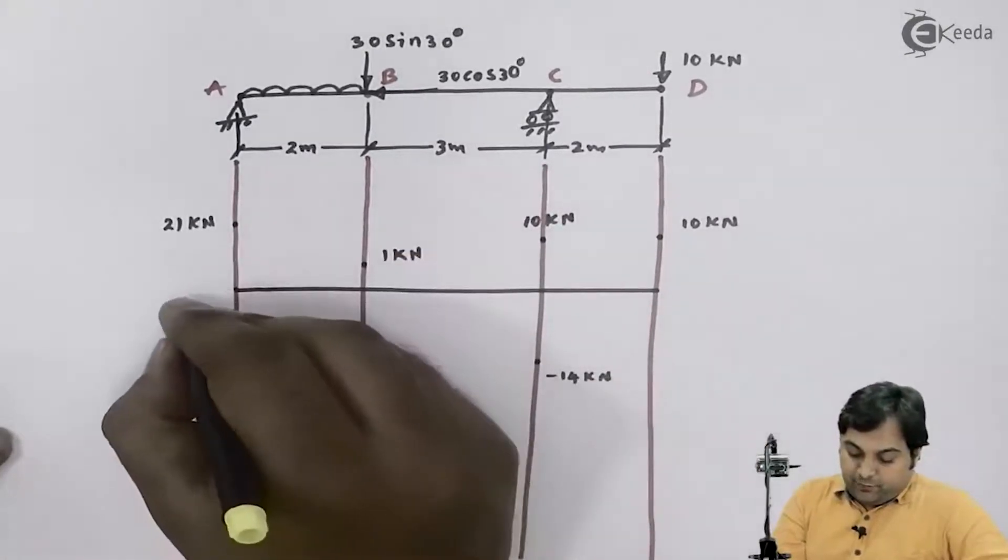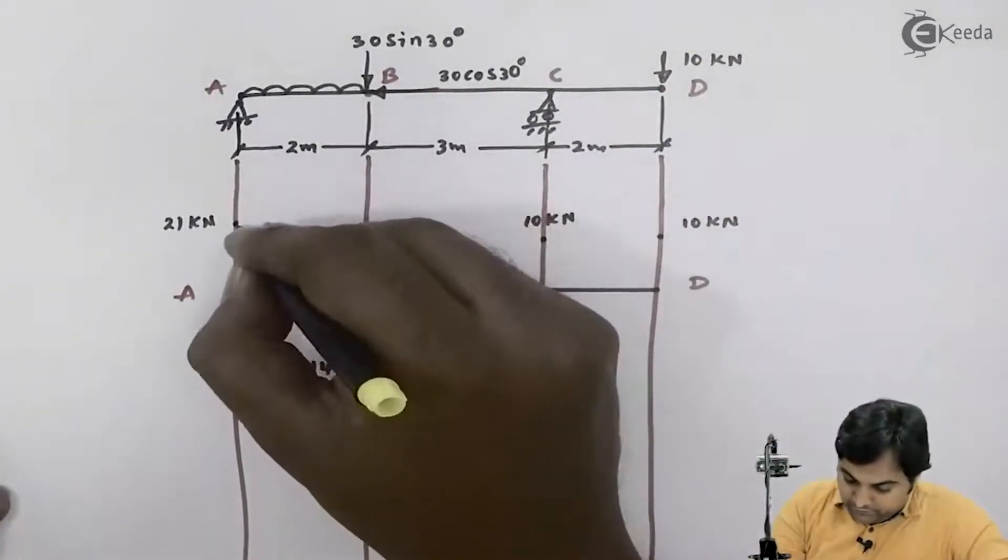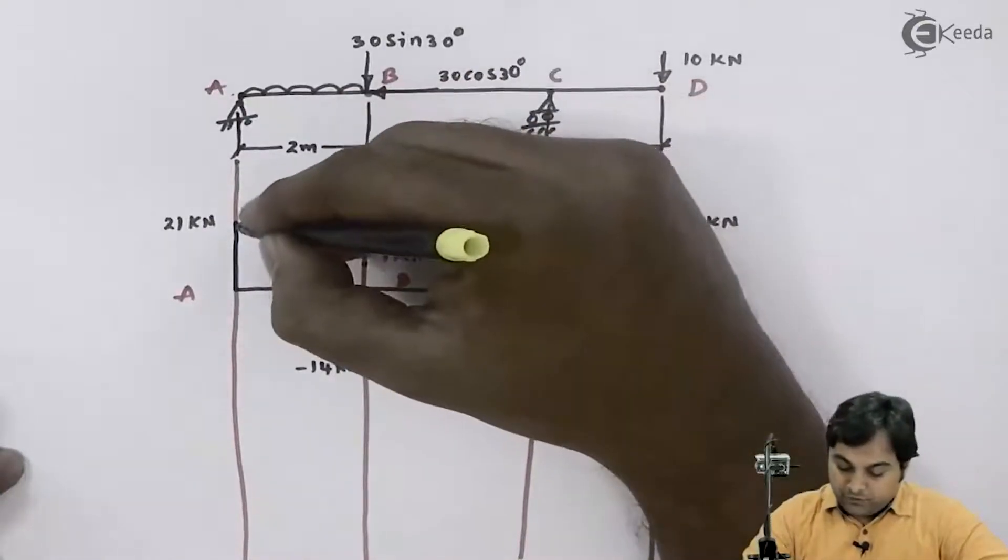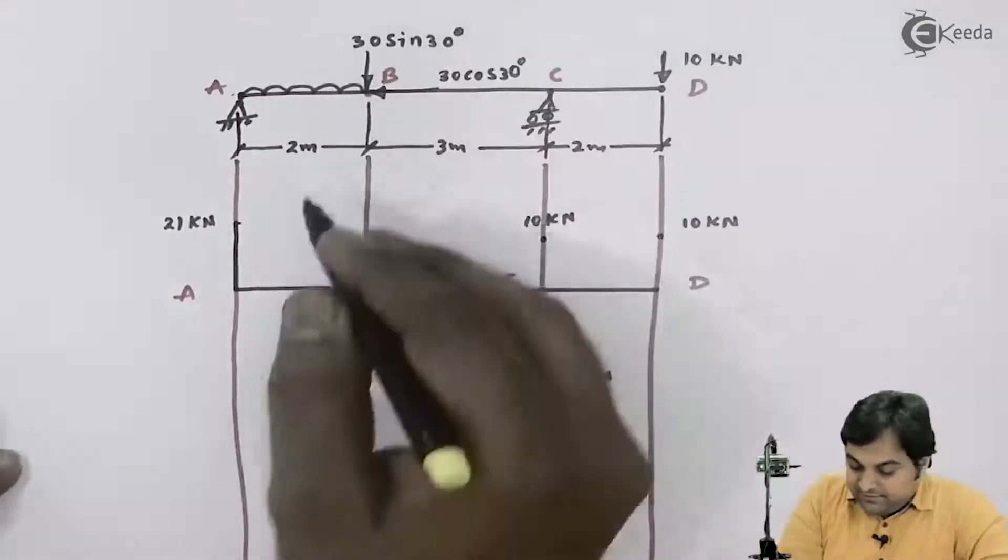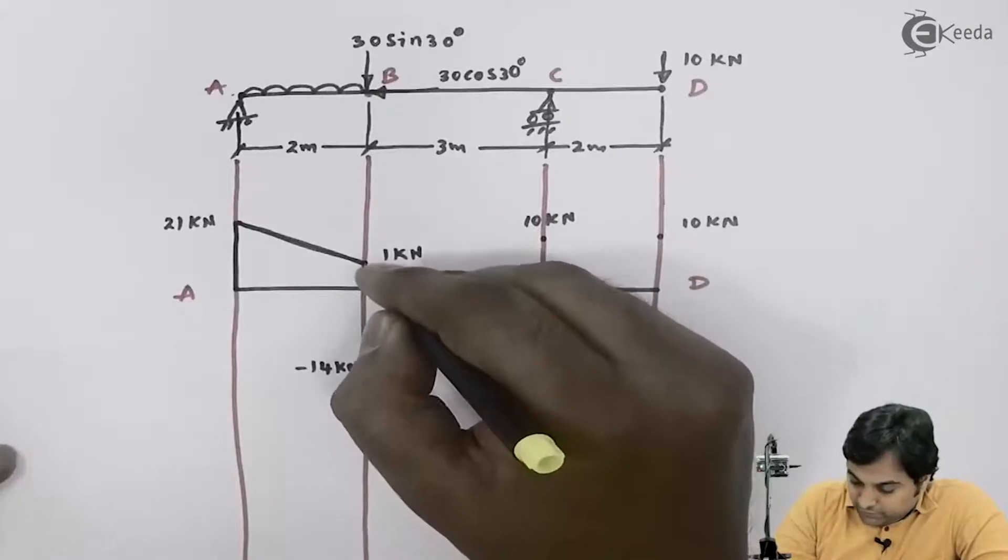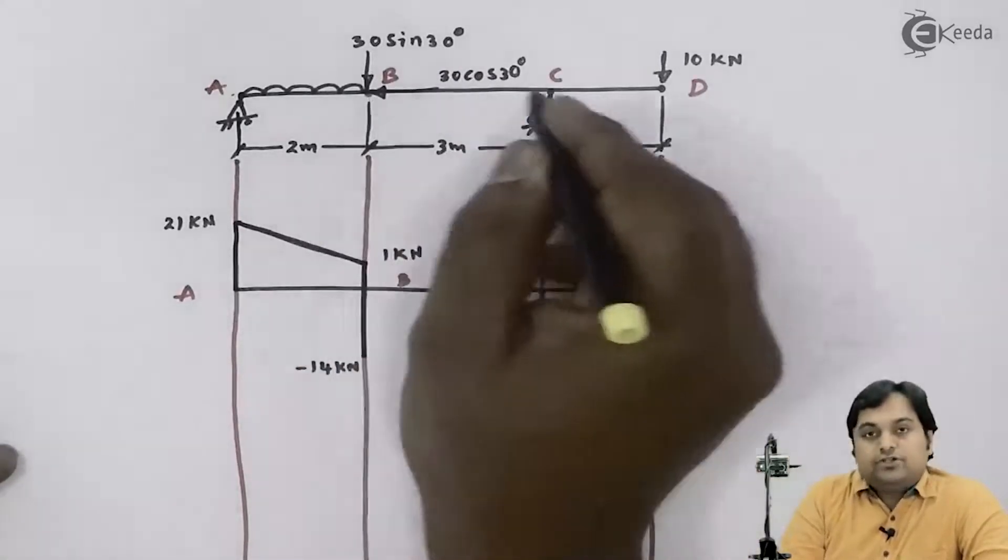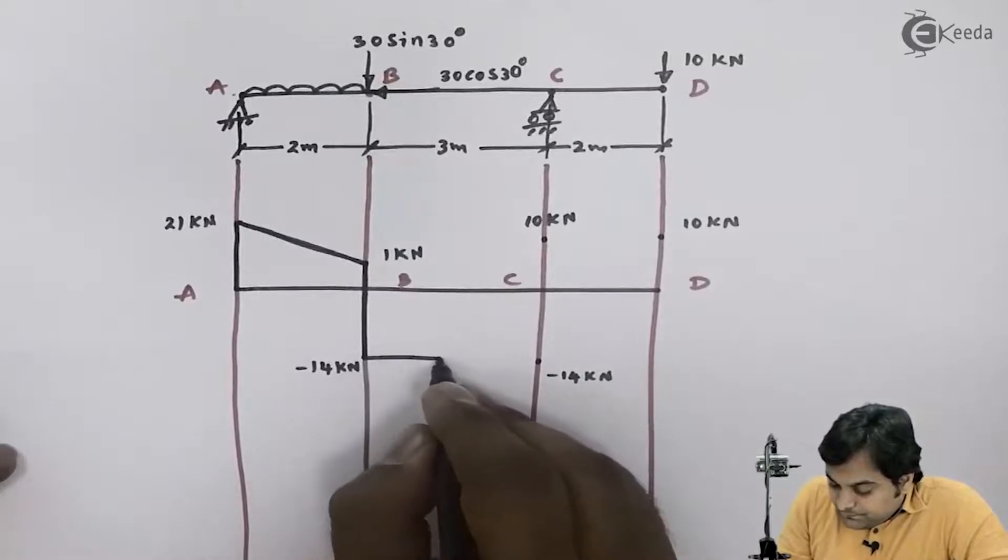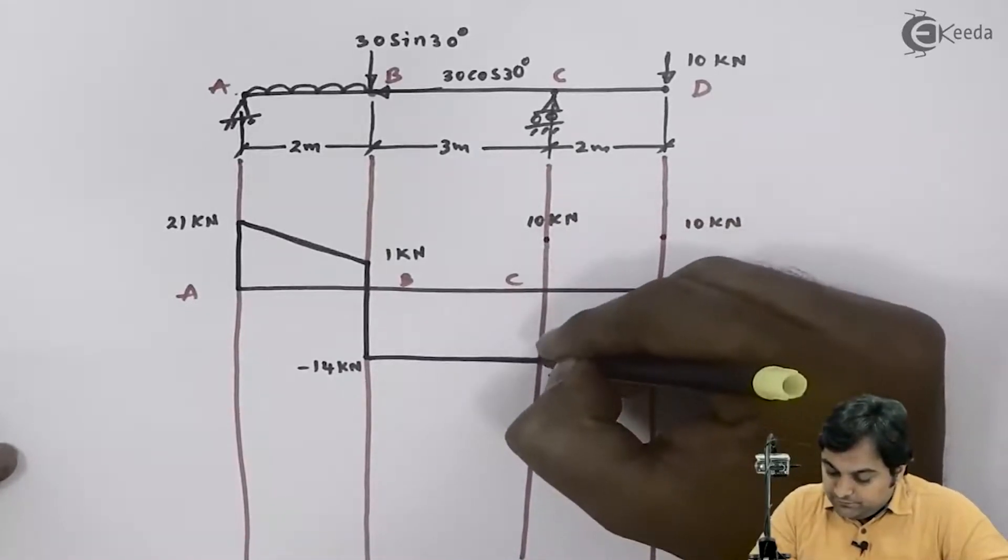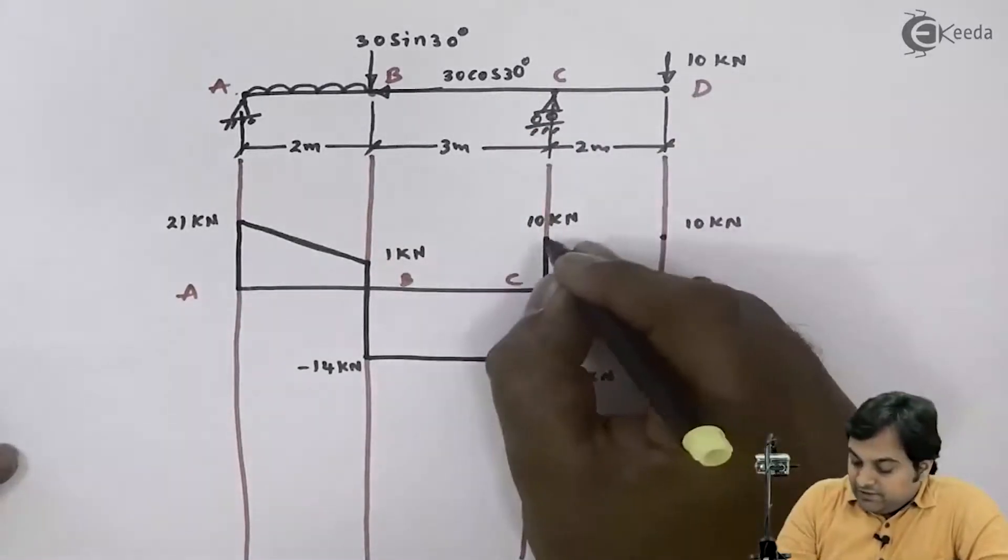Now in order to join them, from point A to 21 kilonewton it would be upward. As there is UDL between A to B, from 21 to 1 it should be an inclined line. Next from 1 to minus 14, the value of shear force decreases. Next it remains constant from B to C. After that it increases up to 10 kilonewton at point C. Then as there is no load between C to D, SF remains constant.